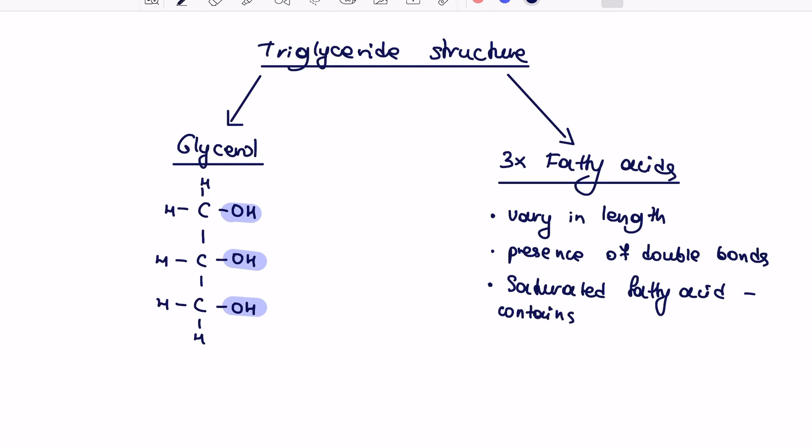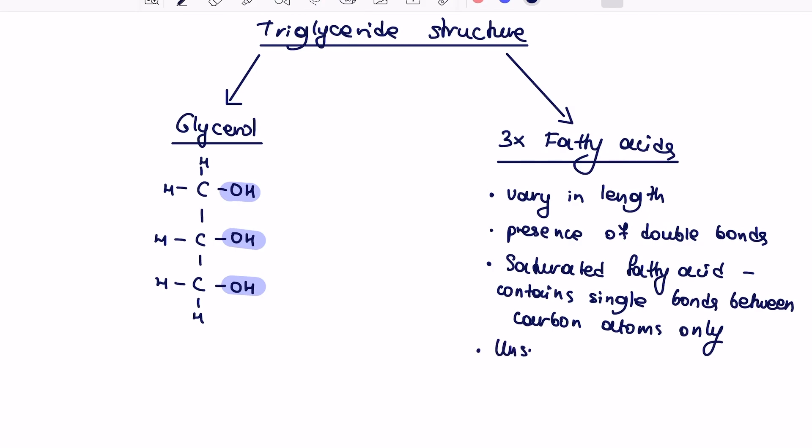Saturated fatty acid contains single bonds between carbon atoms. Unsaturated fatty acid contains at least one double bond between carbon atoms.